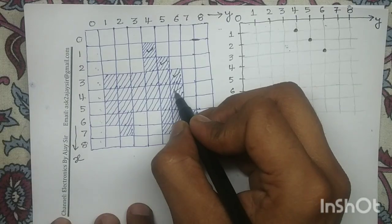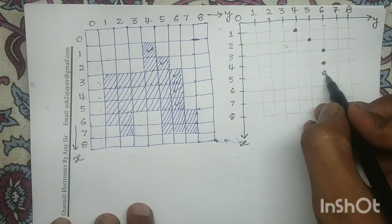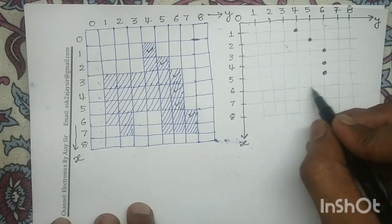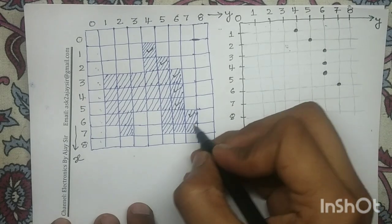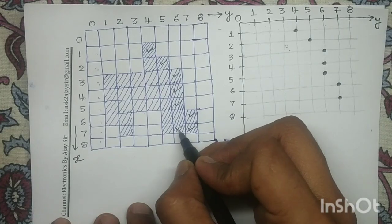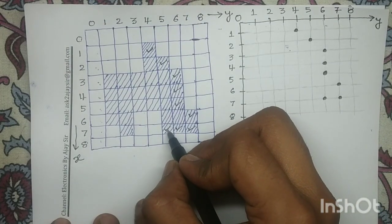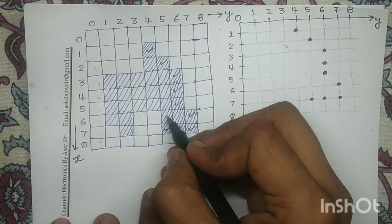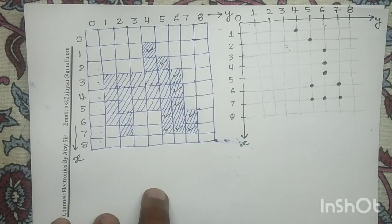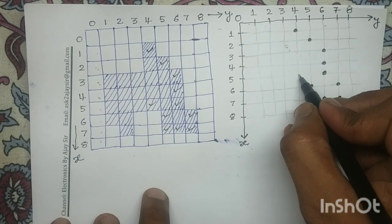The next boundary pixel is 4,6, so 4,6 is this one. Next boundary pixel is 5,6, so this is our 5,6. Our next boundary pixel is this one having the coordinate 6,7, so this is 6,7. The next boundary pixel has the coordinate 7,7, so this is 7,7. Next boundary pixel has coordinate 7,6, so this is 7,6. Next, this pixel has coordinate 7,5, so 7,5 is this pixel. Next boundary pixel has coordinate 6,5, so this is 6,5. Next, our boundary pixel has coordinate 5,4, so 5,4 is this pixel.